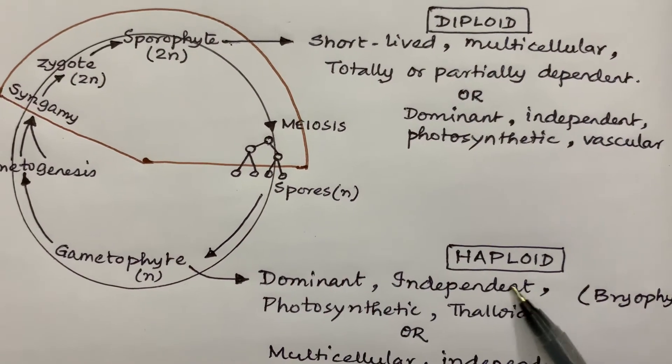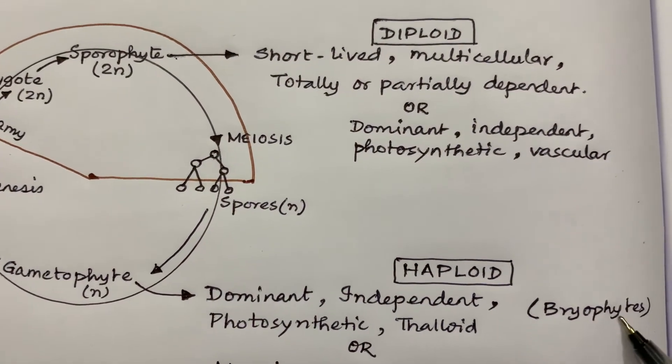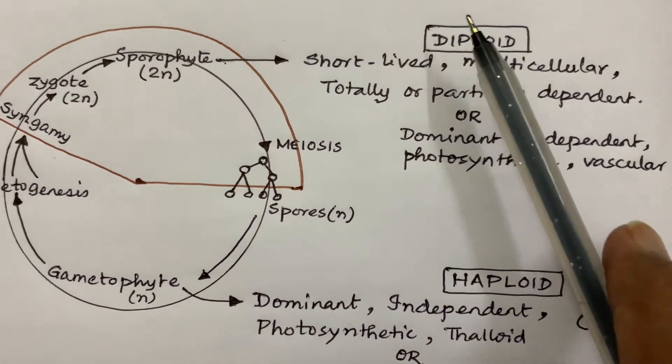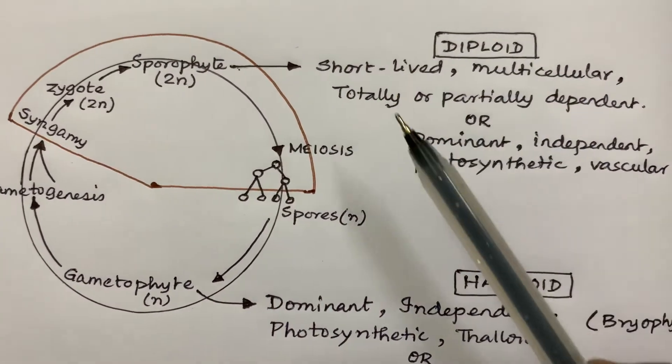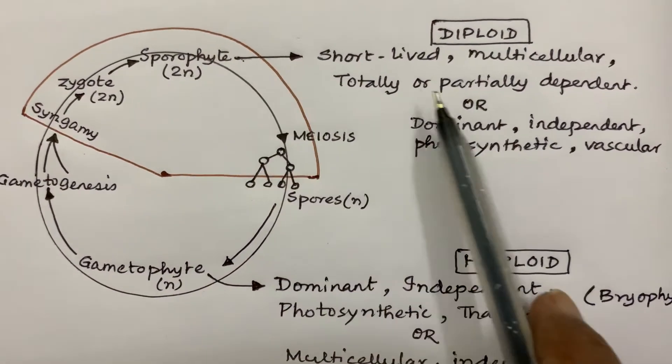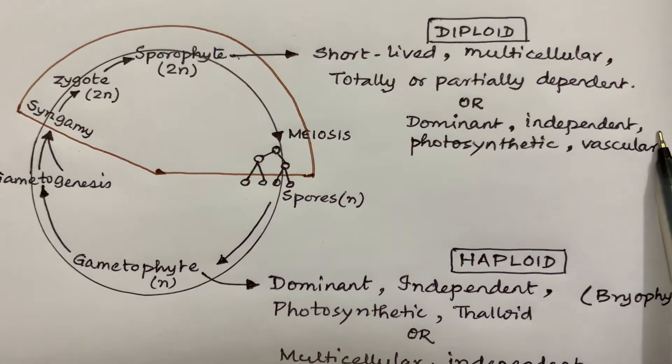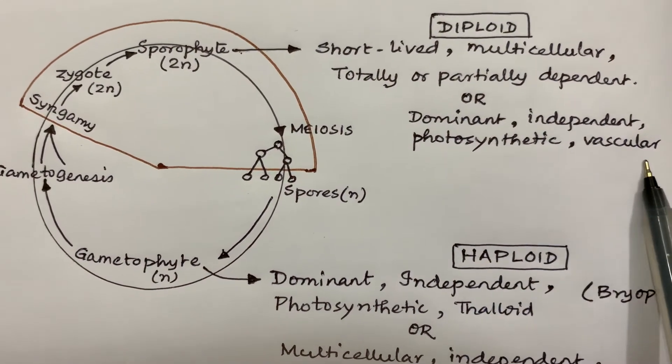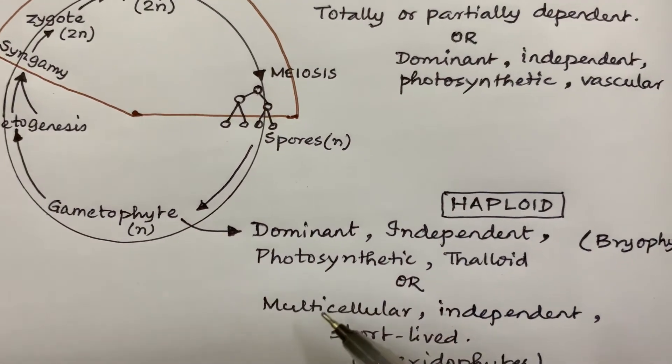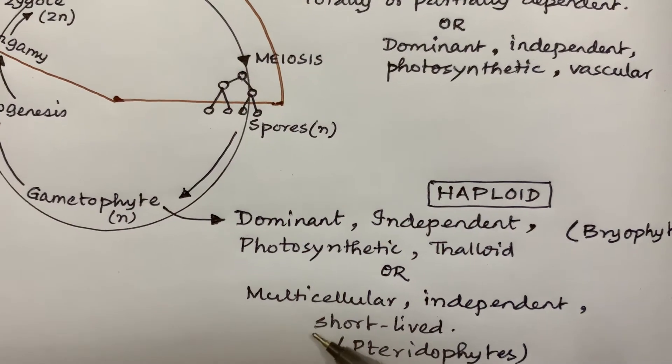But in case of pteridophytes, the picture is the other way around. That means the sporophyte is diploid, dominant, independent, and photosynthetic as well as vascular. But the gametophyte is multicellular, independent, and short-lived in pteridophytes.